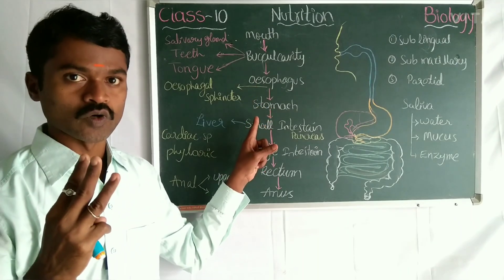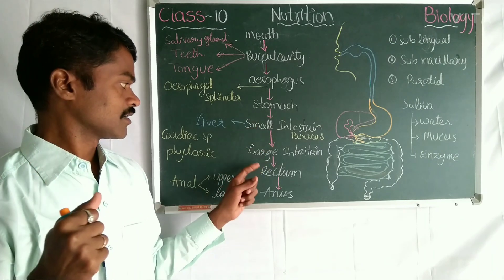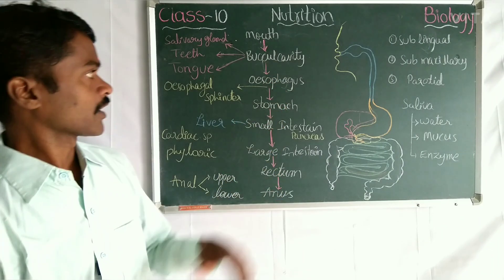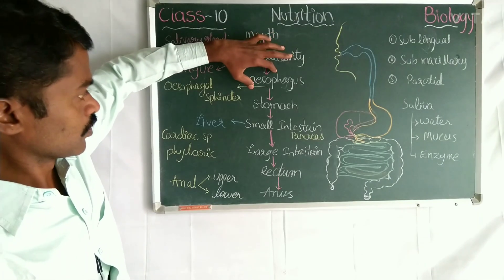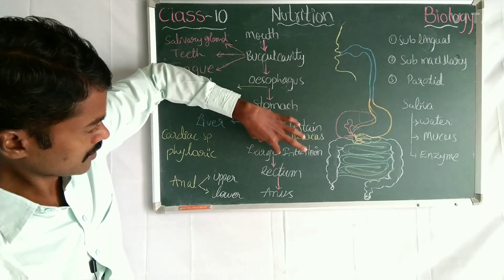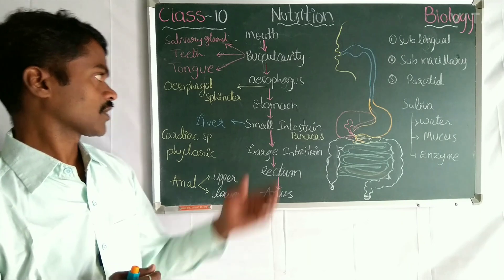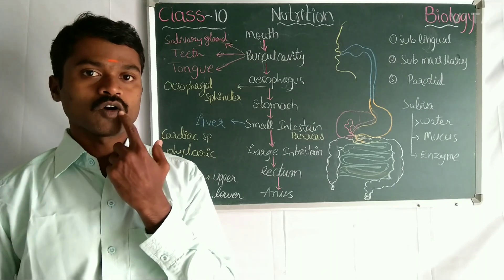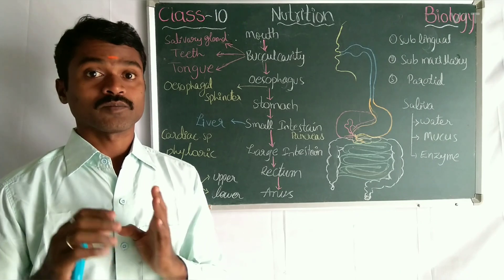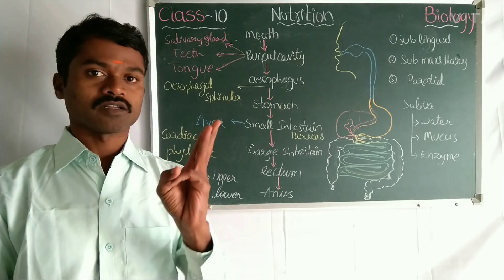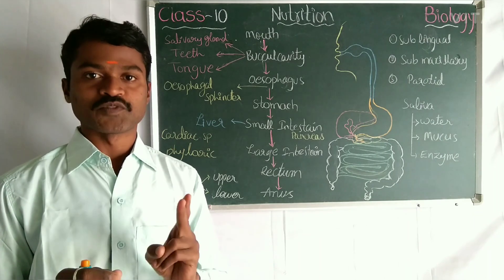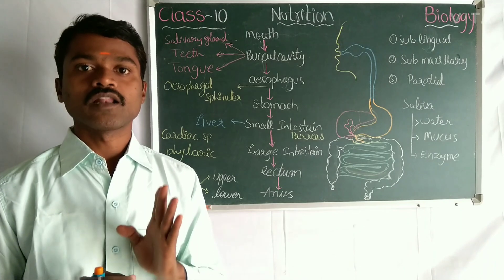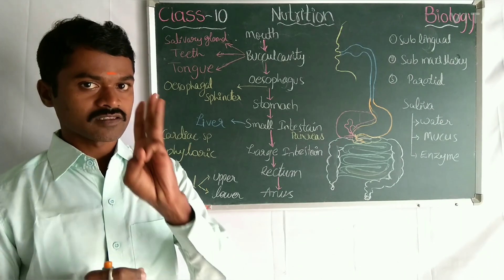These are the parts. First, let's come to the mouth. The mouth is the opening or starting part of the digestive system — the space or cavity between the two lips is called the mouth. Inside, it is called the oral cavity or buccal cavity. The cavity contains three parts: teeth, tongue, and salivary glands.